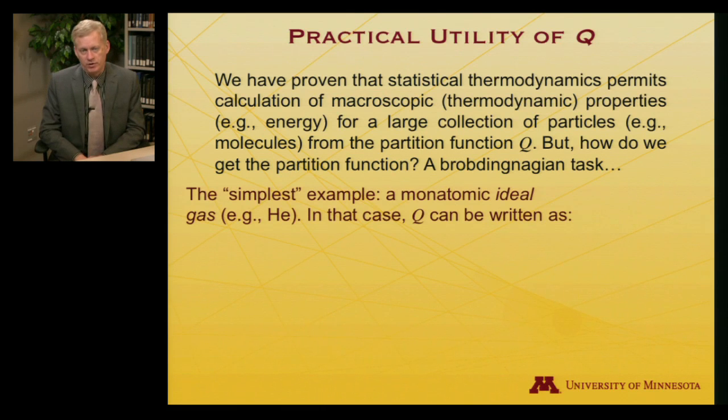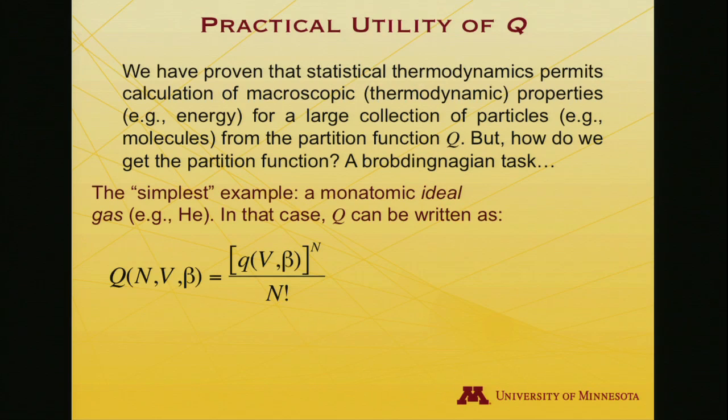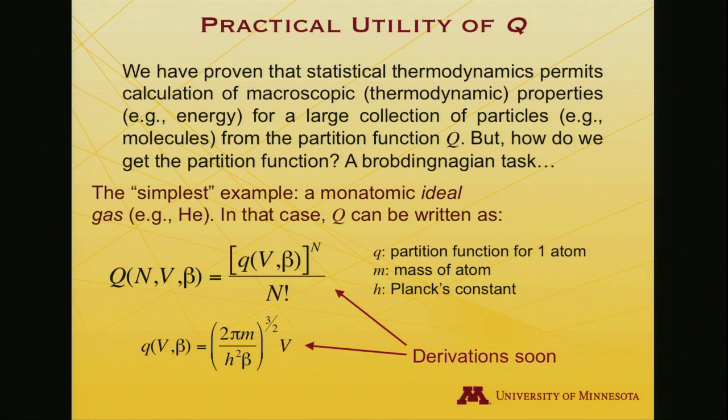Let's do a simple example: a monatomic ideal gas, maybe helium. In that case, one can write the partition function as Q(N,V,β) equal to a quantity little q that depends on volume and beta, all taken to the nth power divided by N factorial, where little q is a big series of constants: at the 3 halves power of 2πm divided by Planck's constant squared and beta in the denominator, all multiplied times the volume. So q is the partition function for one atom of helium, m is the mass, h is Planck's constant.